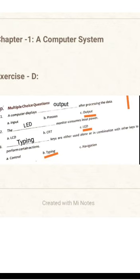Question 3: Dash keys are either used alone or in combination with other keys to perform certain actions. The options are A. Control, B. Typing.